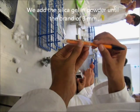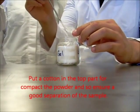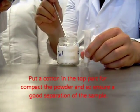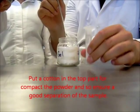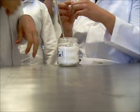We add the silica gel in portions until the mark of 3 cm. Put a cotton in the top part to compact the powder and ensure a good separation of the samples.